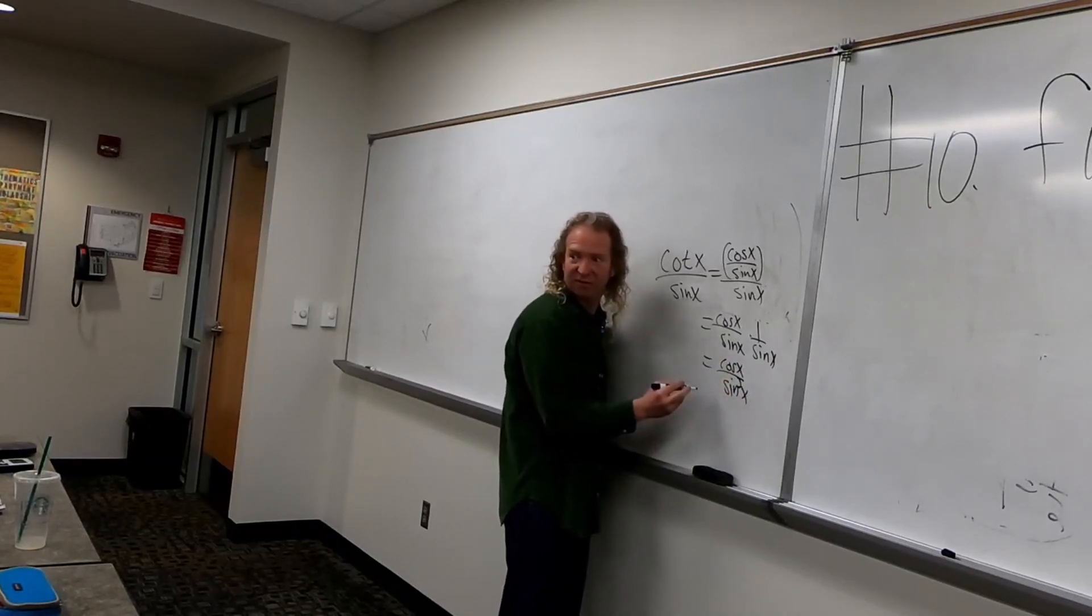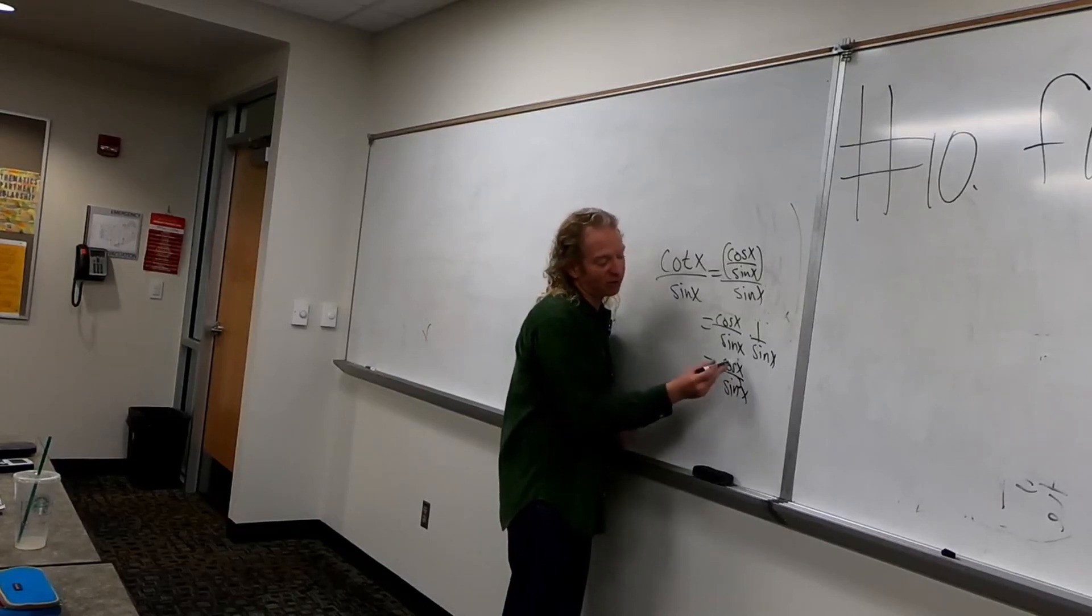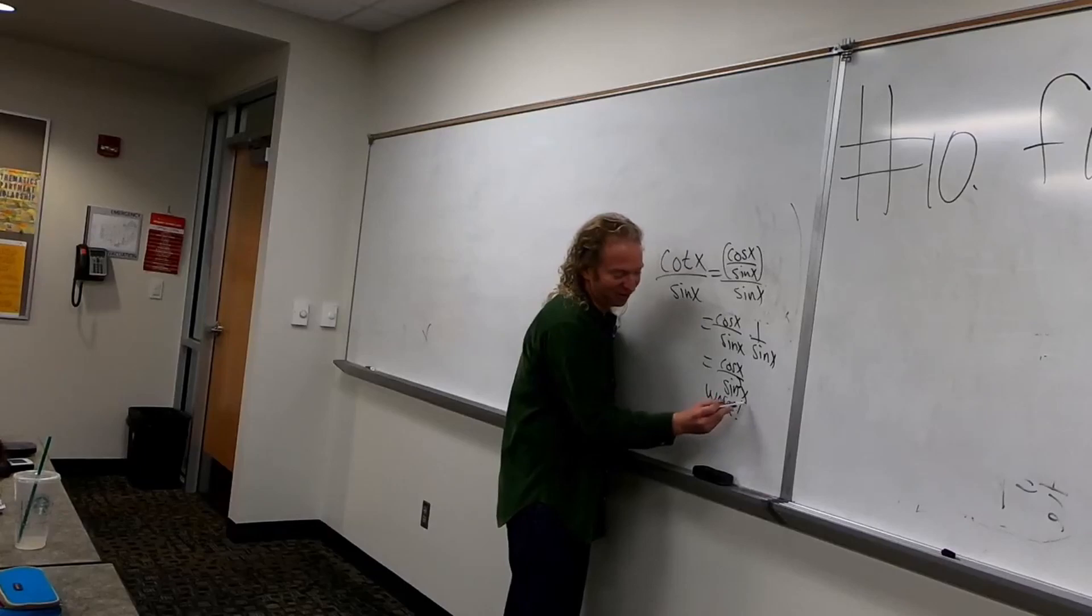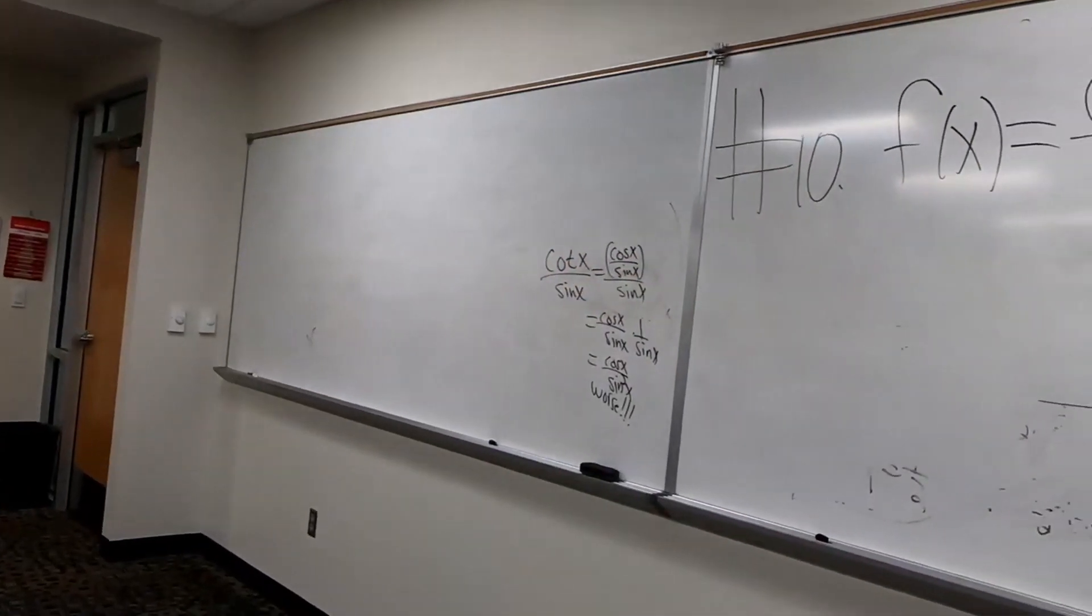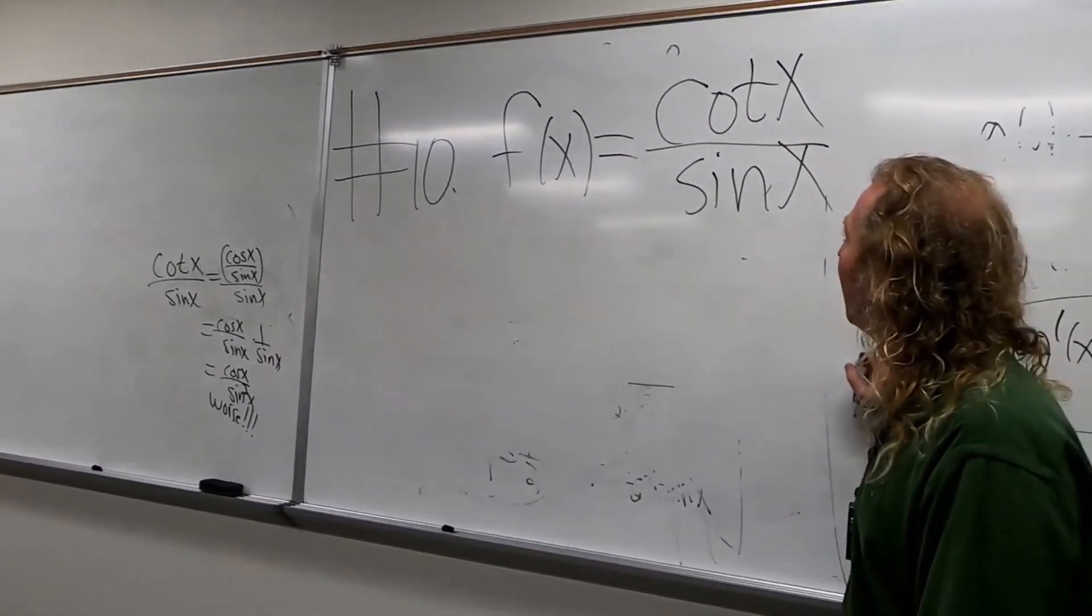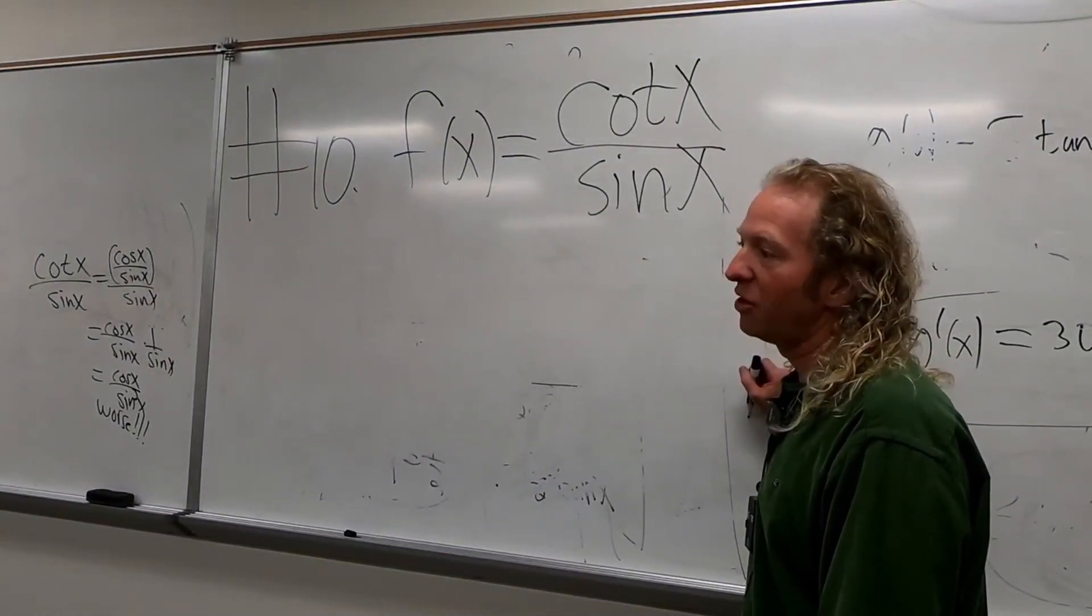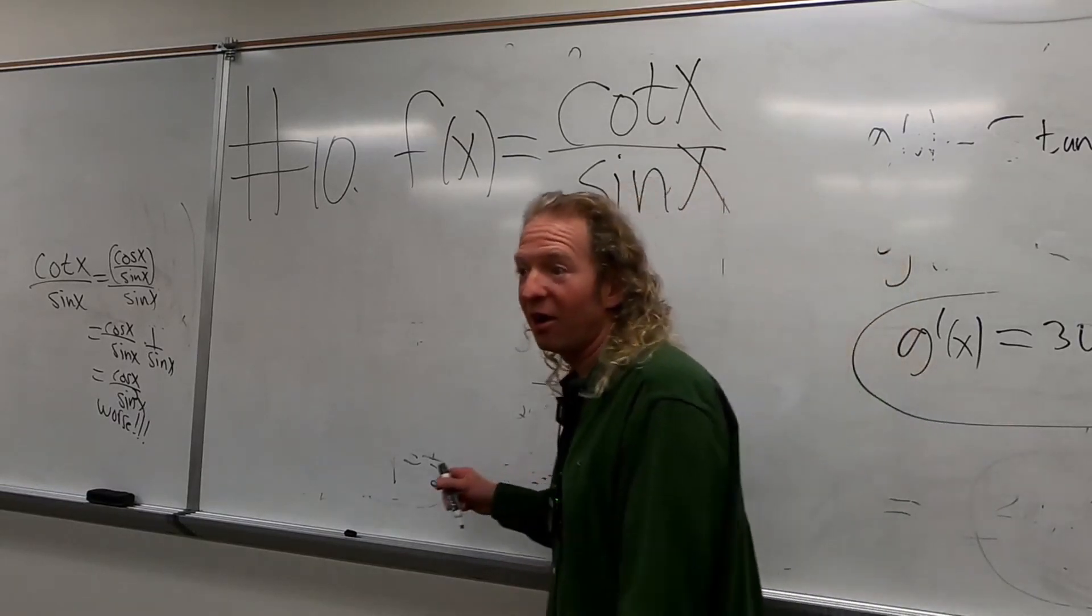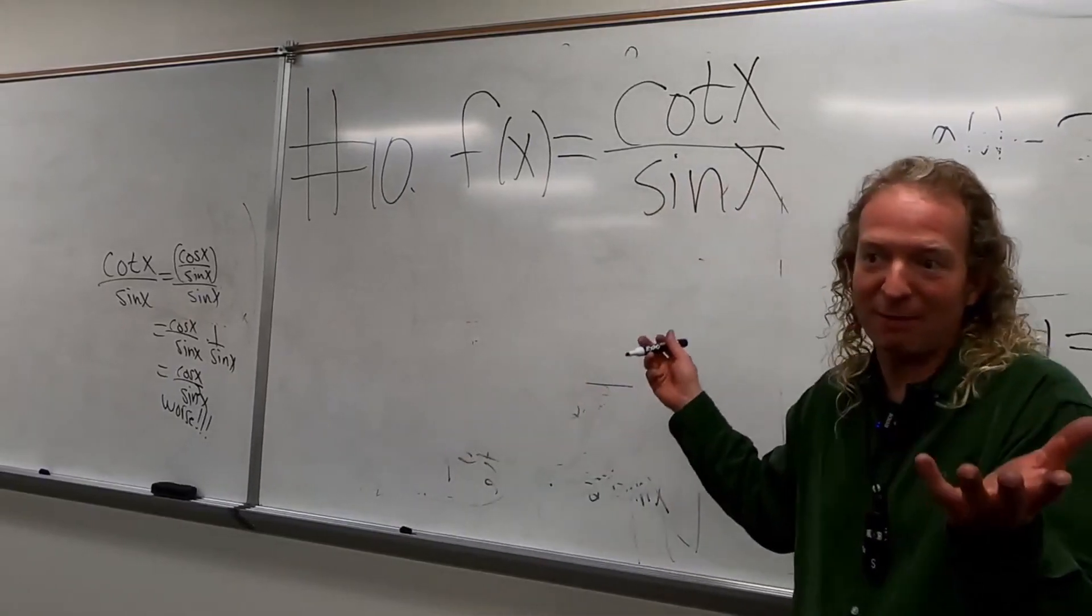But when you find the derivative, doesn't the cosine change to negative sine? Yeah, but we have to use the quotient rule. So this is worse. If you pull the sine x out and go cotangent x times 1 over sine, that would be cotangent times cosecant. And you can use like a product rule? You want to do that? Okay, let's try that. I was just going to do a quotient, but let's do that. That might be better.